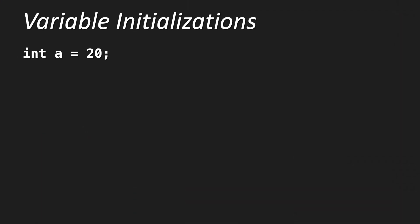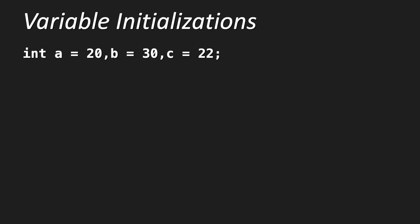You can combine declaration and initialization. As we see here, you can write int a equals 20, but you can also declare and initialize multiple variables in one row. For instance, int a equals 20, b equals 30, c equals 22, semicolon. So you have multiple integer variables declared and initialized in one row.